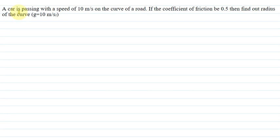Hello everyone, I am your teacher for this question. Let me explain this question to you. A car is passing with a speed of 10 meters per second on the curve of a road. If the coefficient of friction is 0.5, then find out radius of the curve. Small g is 10 meters per second squared.